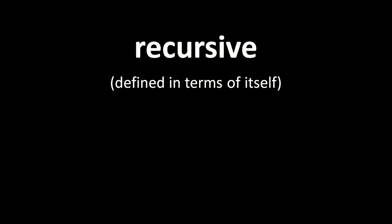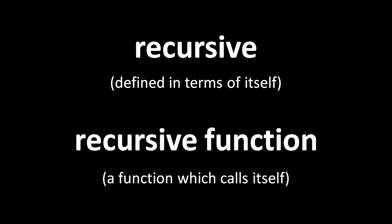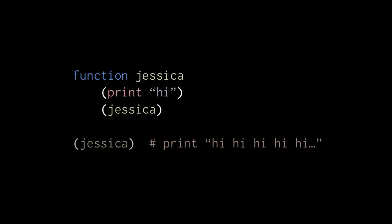Something which is recursive is defined in terms of itself. This may sound like a logical impossibility, but in fact it's not. A recursive function is a function which, somewhere in its body, invokes itself. Here's a function jessica which prints hi and then invokes itself. When we invoke jessica, it prints hi and then invokes itself, and this second invocation also prints hi, and then invokes jessica again — and this will happen ad infinitum.